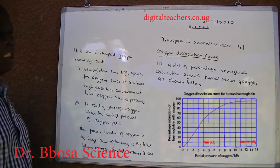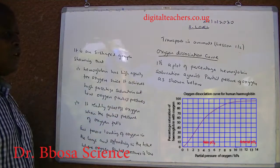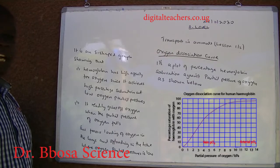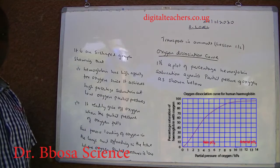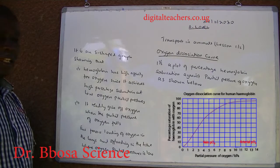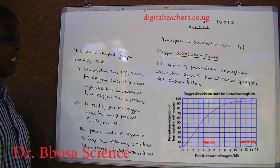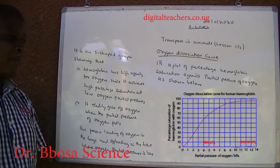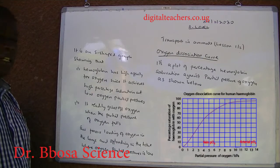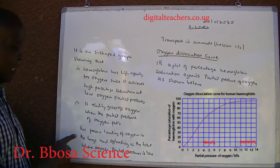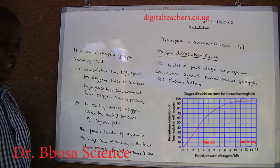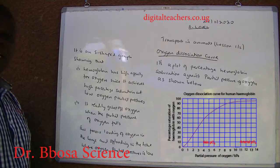Oxygen dissociation curve: it is a graph of percentage hemoglobin saturation against partial pressure of oxygen. It is an S-shaped graph showing that hemoglobin has high affinity for oxygen, since it achieves high percentage saturation at low oxygen partial pressures. It readily gives up oxygen when the partial pressure of oxygen falls, which favors loading of oxygen in the lungs and off-loading in the tissue where oxygen partial pressure is low.